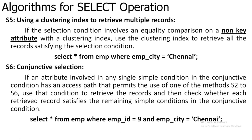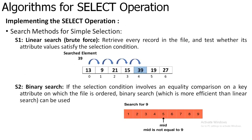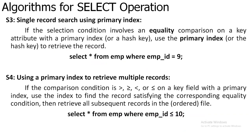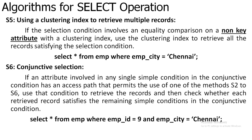This is about the algorithms for select operation. We saw linear search, binary search, and single record search using primary index — where you can retrieve only one record using the primary key. Next, using the primary index to retrieve multiple records — you can retrieve multiple records at a time. Then we saw the clustering index to retrieve multiple records, where instead of giving the condition on a primary key, you give conditions on non-key attributes. The last one is conjunctive selection, where you combine two or more conditions together to retrieve the data. Thank you.